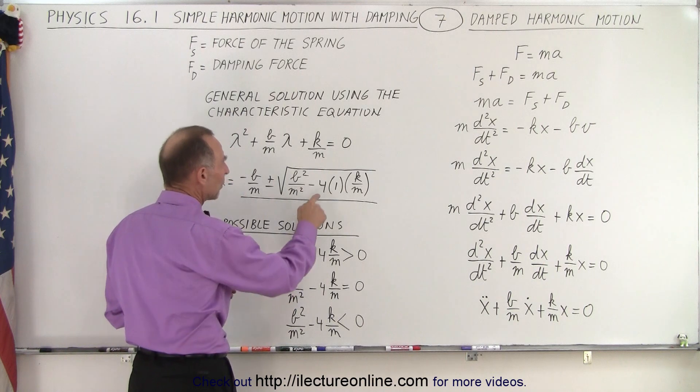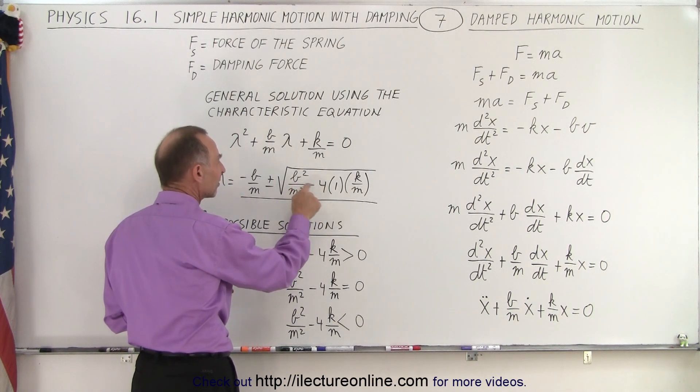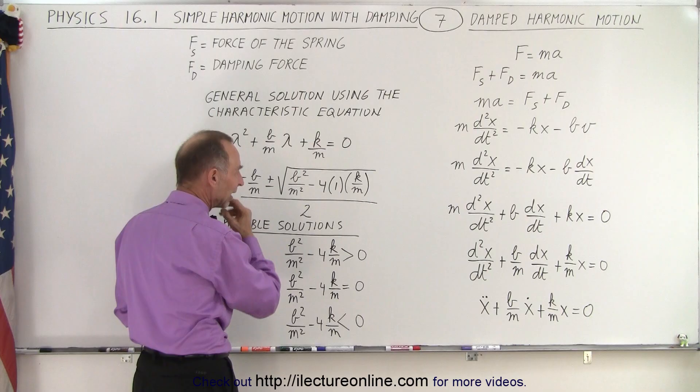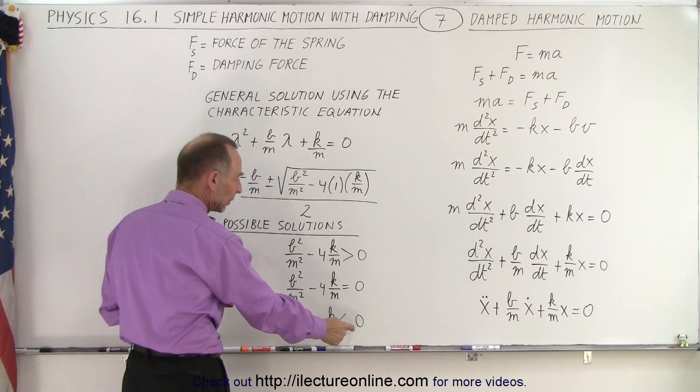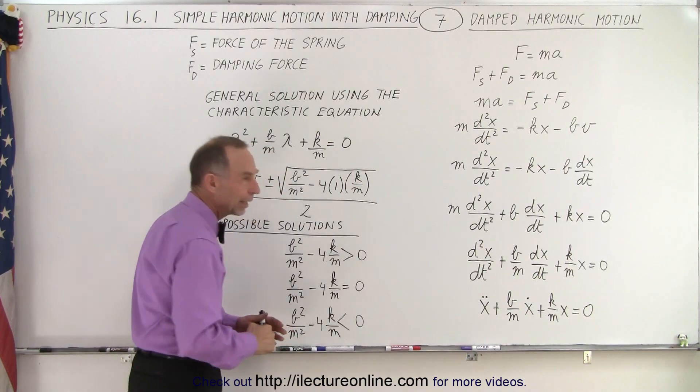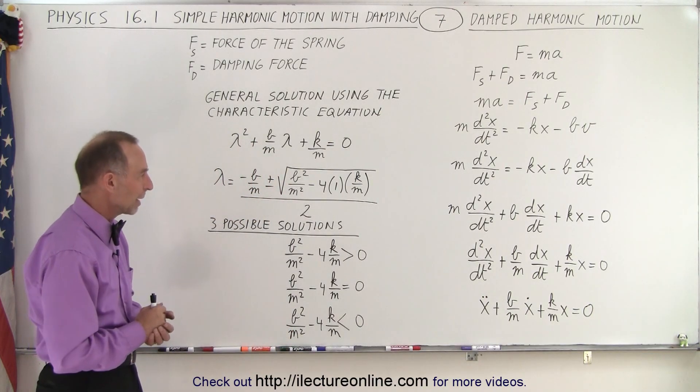And then finally, when we end up with this being less than this, if there's a very small damping effect, then we end up with a negative quantity in the radical, and then we have this whole thing being less than zero, and of course that is the result of a small amount of damping.